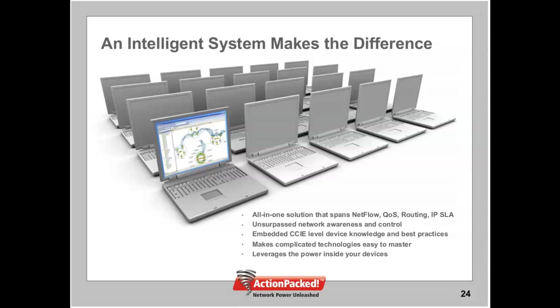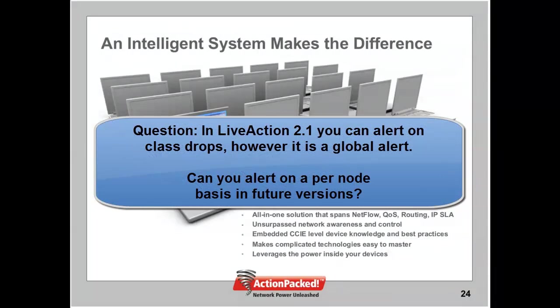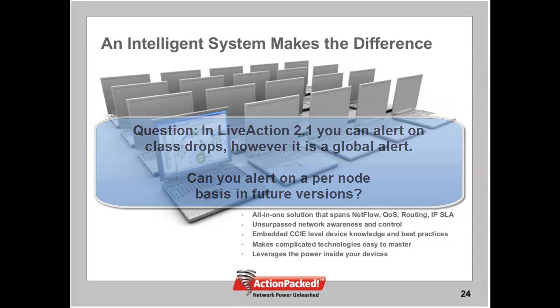Next question: in version 2.1 you can alert on class drops, but it's a global alert — can you do this on a per-node basis in future versions? Ken just showed in the custom triggers window that you can actually create alerts based on device as well as anything else you'd like to look at. So dig around in that custom triggers view and I think you'll find everything you need right in there.